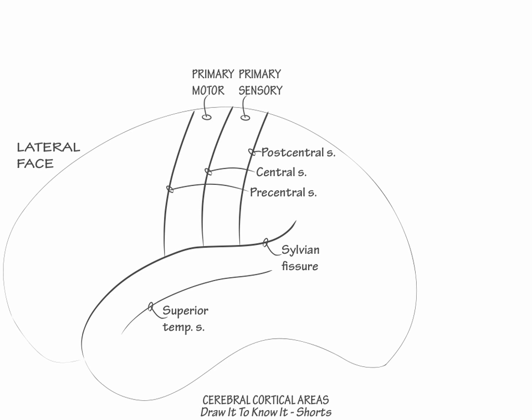In front of the primary motor area, label the pre-motor area, Brodmann area 6. Next, in front of the pre-motor area, label the frontal eye fields, Brodmann area 8. This area is the human homologue to the rhesus monkey frontal eye fields, the animal model for human eye movements.